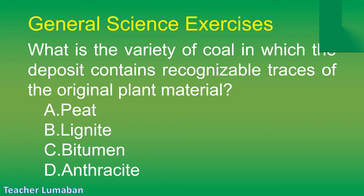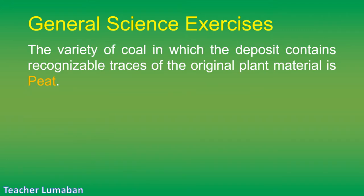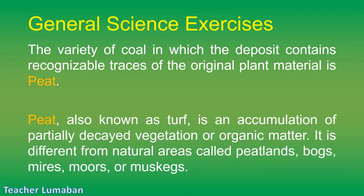The correct answer is Letter A: peat. The variety of coal in which the deposit contains recognizable traces of the original plant material is peat. Peat, also known as turf, is an accumulation of partially decayed vegetation or organic matter. It is different from natural areas called peatlands, bogs, mires, moors, or muskegs.